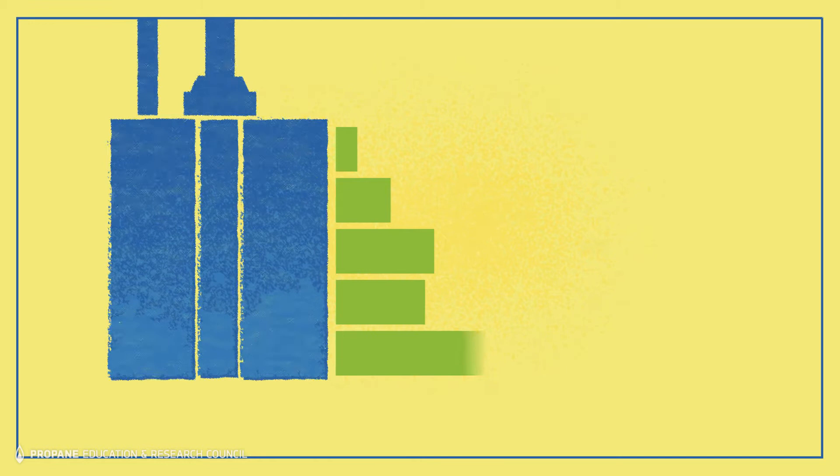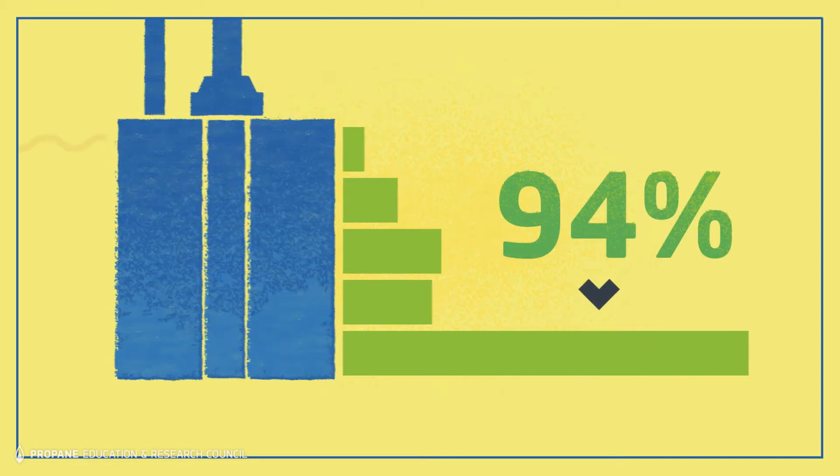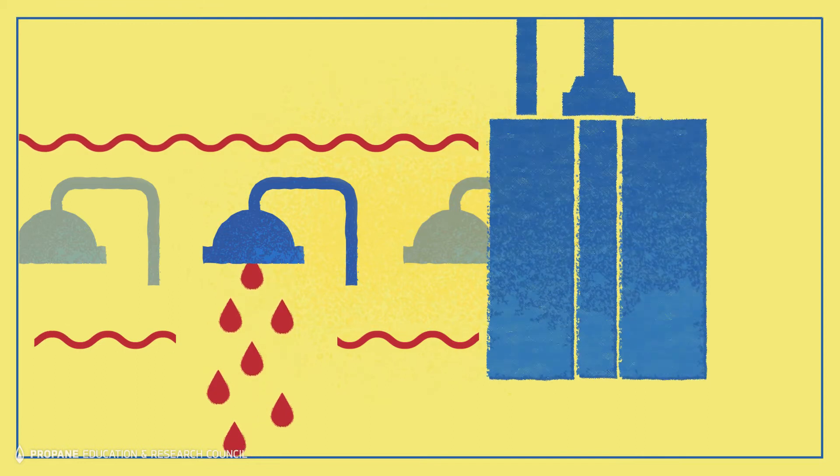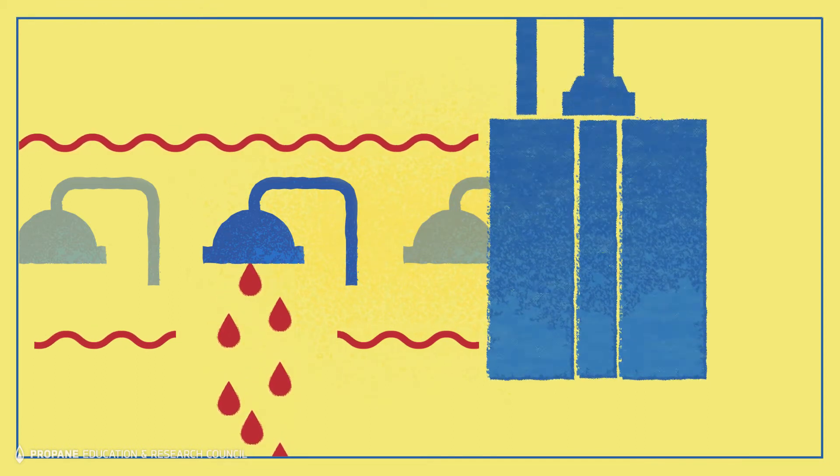Second, it allows a home to take advantage of the reliability and thermal efficiency of a propane tankless water heater, which can achieve efficiency levels around 94%. Tankless water heaters provide endless water on demand, so running out of domestic hot water isn't a concern.